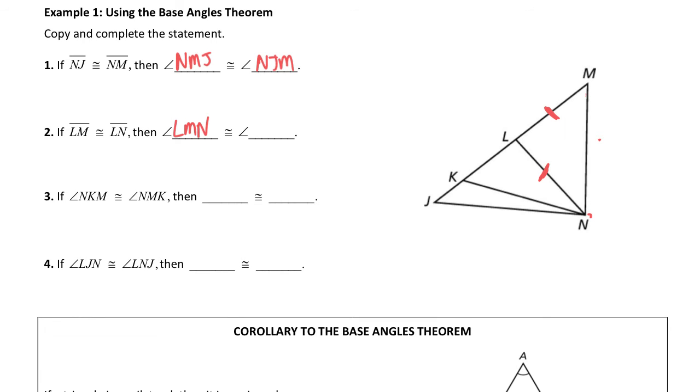Because it's opposite from the congruent side. That's how we say which angles are congruent in an isosceles triangle, the base angles, the angles opposite from the congruent sides.